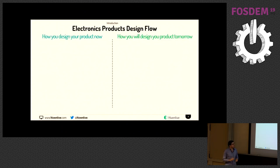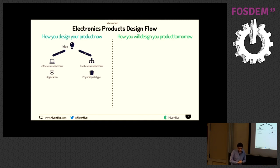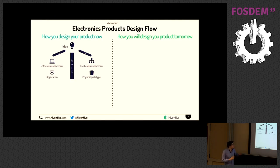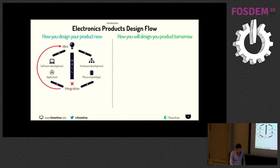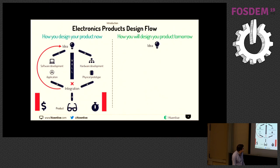How do you design your product now? You have an idea and you ask your software developers and your hardware developers to build their parts — the application and the physical prototypes. During development, you don't really have communication between both teams — the hardware team and your software team. Then you have the integration: the hardware team gives a physical prototype to the software team. Most of the time, it doesn't work. You have to go back and try again. Finally, you have your product, but you've spent time and lost money.